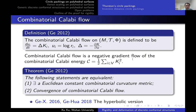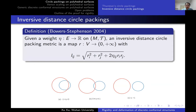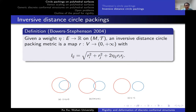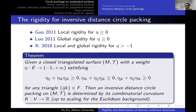Then we come to inversive distance circle packing, introduced by Bowers and Stephenson. They replaced the weight φ with a weight η defined on edges with values in the real numbers. If η is between zero and one, the inversive distance circle packing reduces to the Thurston circle packing.